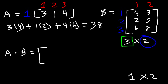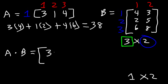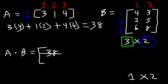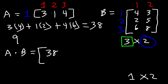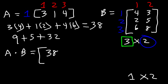Since we multiplied the first row by the first column, this result goes in the first row, first column entry. Now let's multiply the first row by the second column — that result will go in the first row, second column. So we have 3 times 3 which is 9, plus 1 times 5 which is 5, plus 4 times 8 which is 32. Nine plus 5 is 14, and 14 plus 32 is 46. So 46 goes in the first row, second column, and that's our answer.